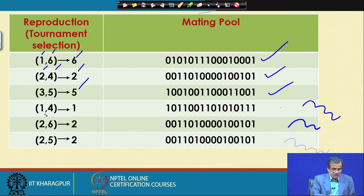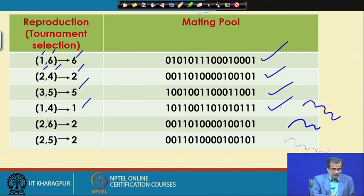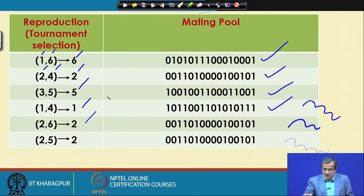Next I go for the fourth tournament and I select first and fourth at random. Out of first and fourth, the first one is better, so I am going to directly copy it here. For the fifth tournament, we select second and sixth at random and I am going to select second because its modified fitness value is less compared to that of sixth. So I am going to copy the second GA string in the mating pool.